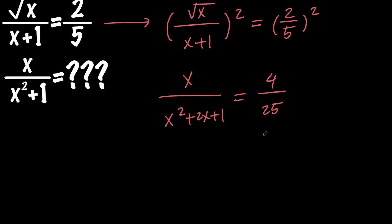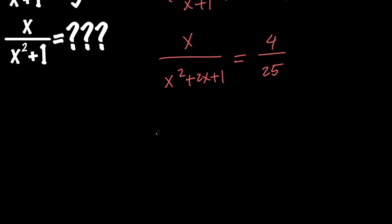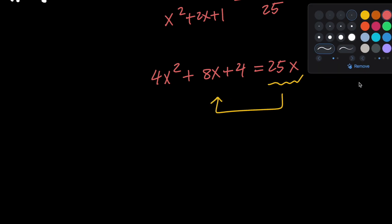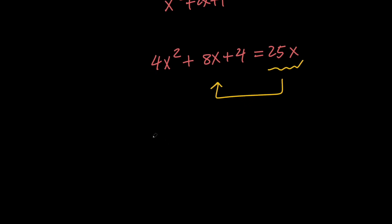Next let's go ahead and cross multiply. So we're going to get 4x squared plus 8x plus 4 equals 25x. Then let's go ahead and move this to the left hand side, so we're going to have 4x squared minus 17x plus 4 equals 0.